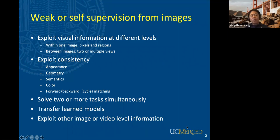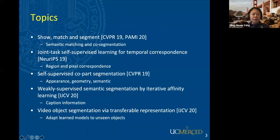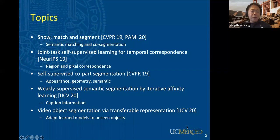Another thing we often use is information from two consecutive images in a video, or several images in a sequence, or two views of the same object. We want to find correspondence and semantic information for segmentation or tracking. Across all these papers, we explore consistency in appearance, geometry, semantics, and color. We also use forward-backward matching and cycle consistency. I'm going to mainly talk about the first work — show, match, and segment — and briefly touch on work presented at NIPS, CVPR-19, and IJCV 2020.